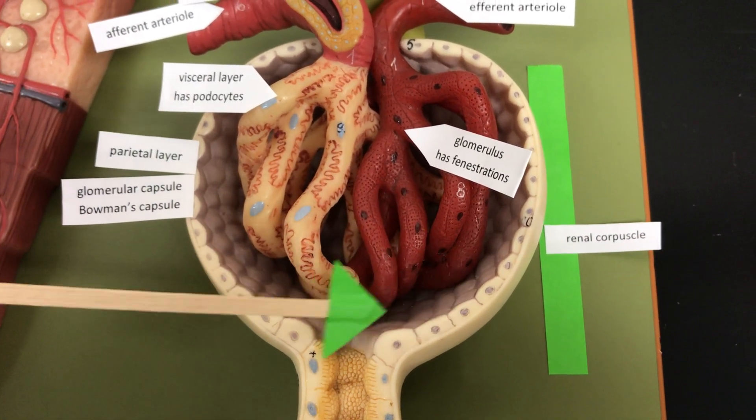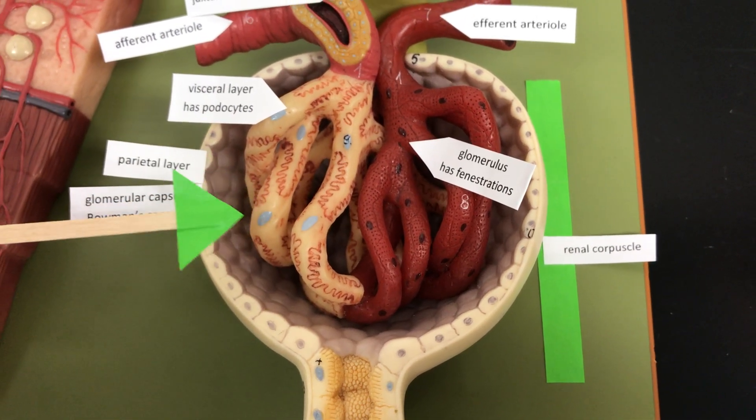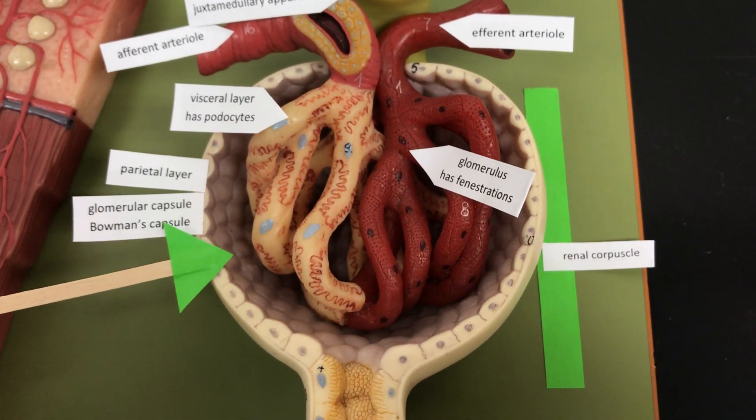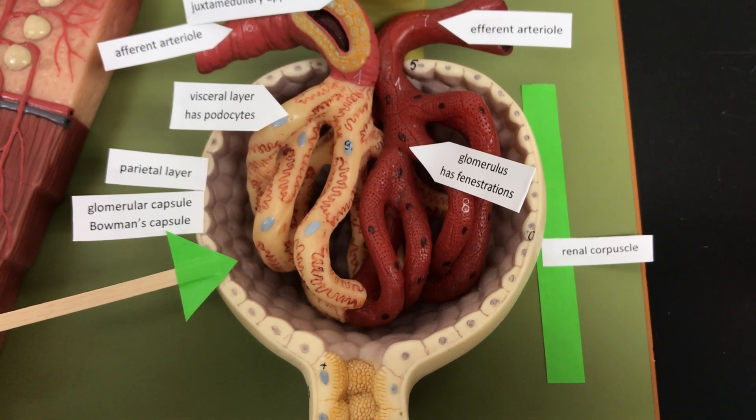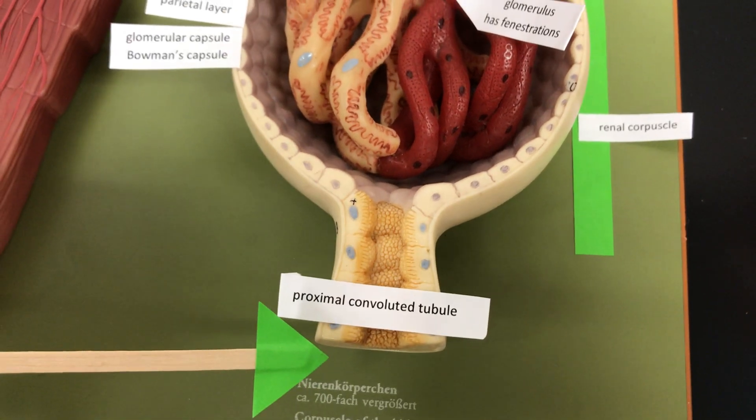The filtrate will get caught in this space here between the visceral layer and the parietal layer of the glomerular capsule or the Bowman's capsule. That filtrate is then going to travel down the proximal convoluted tubule.